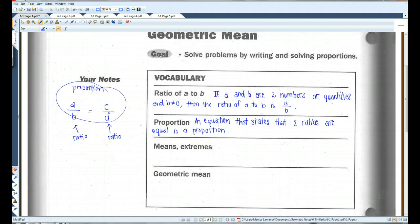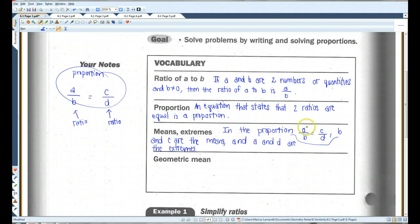Alright, means and extremes. In the proportion A over B equals C over D, B and C are the means, A and D are the extremes.